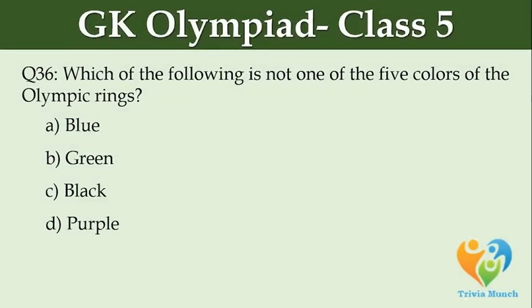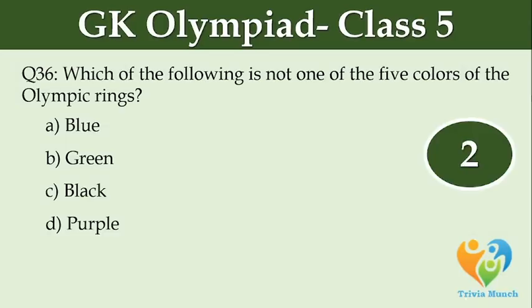Which of the following is not one of the five colors of the Olympic rings? Option A: Blue. Option B: Green. Option C: Black. Option D: Purple.